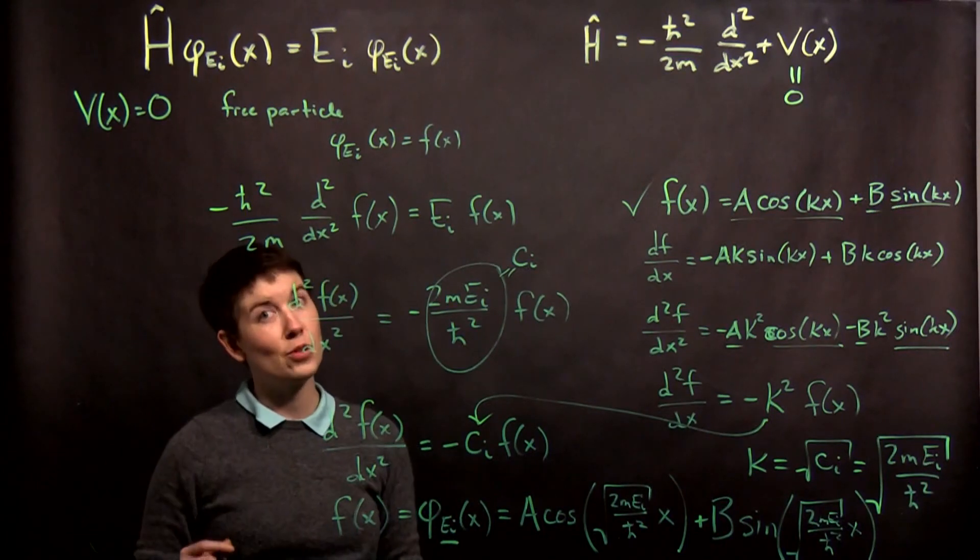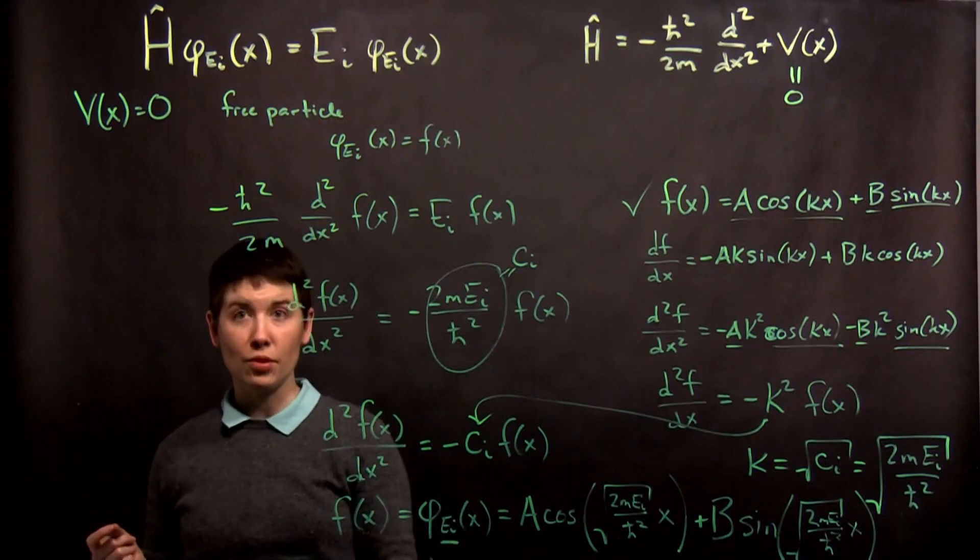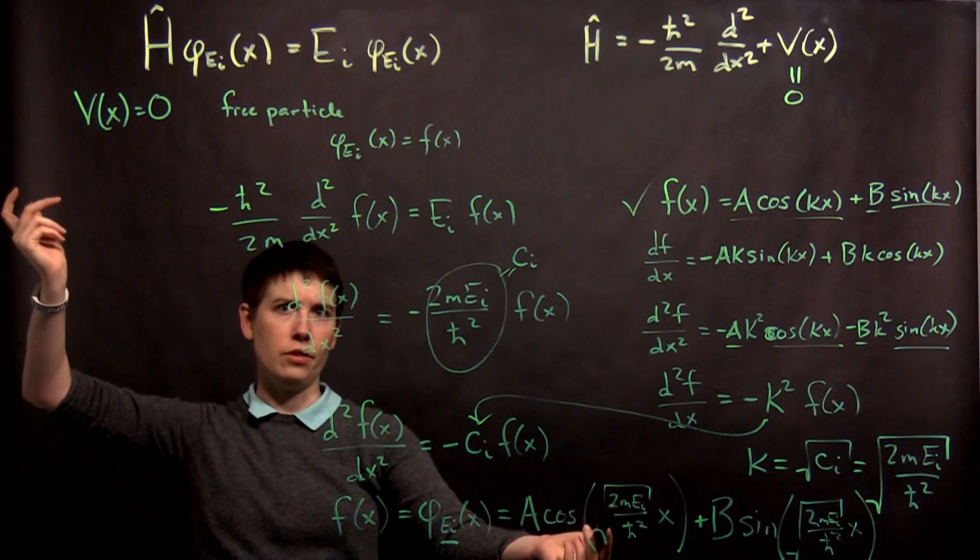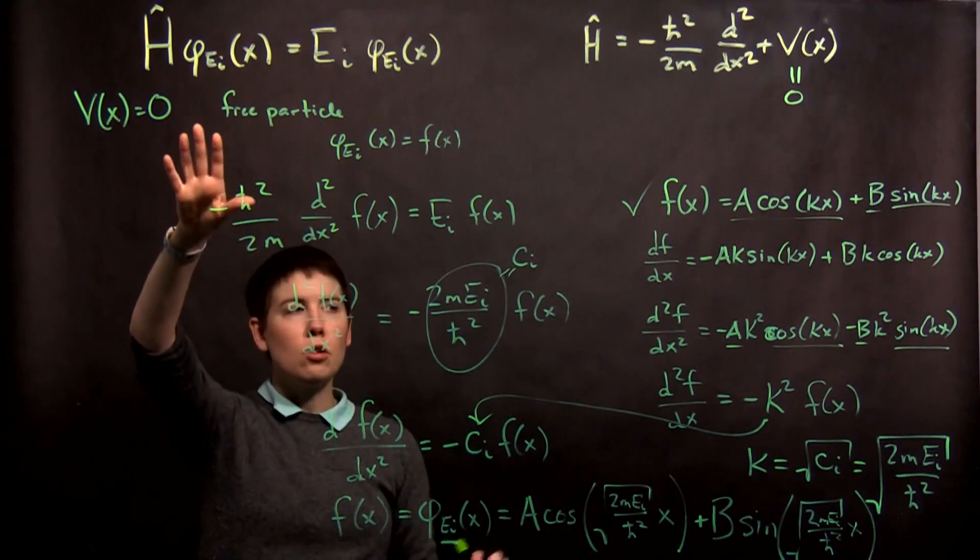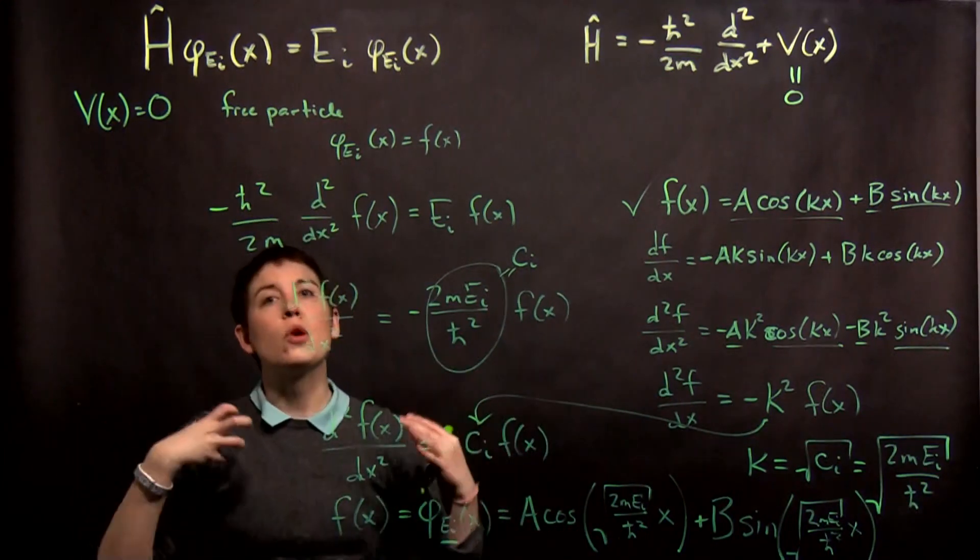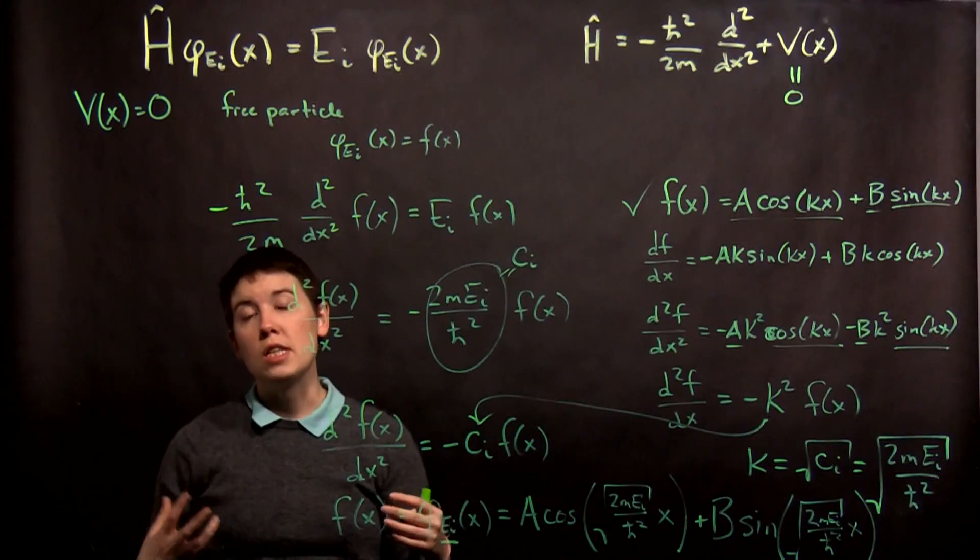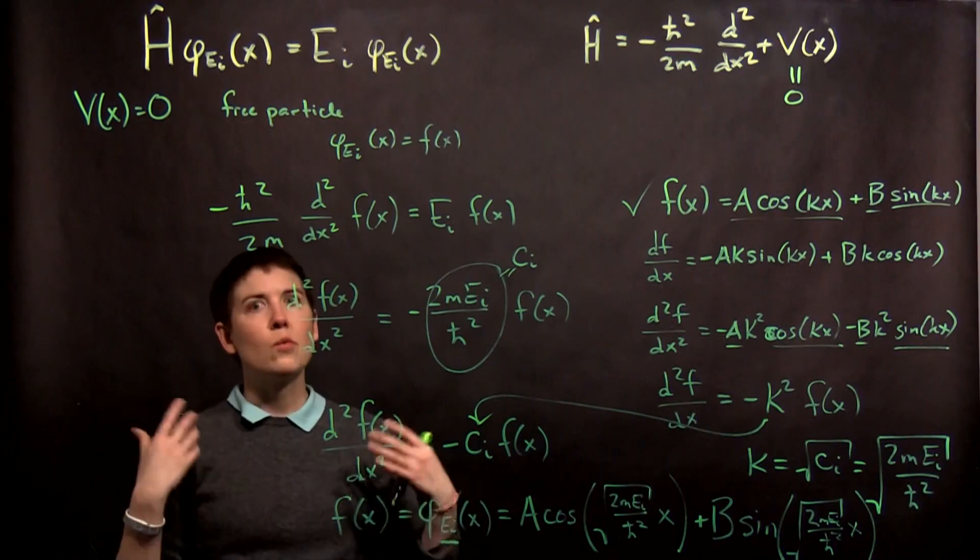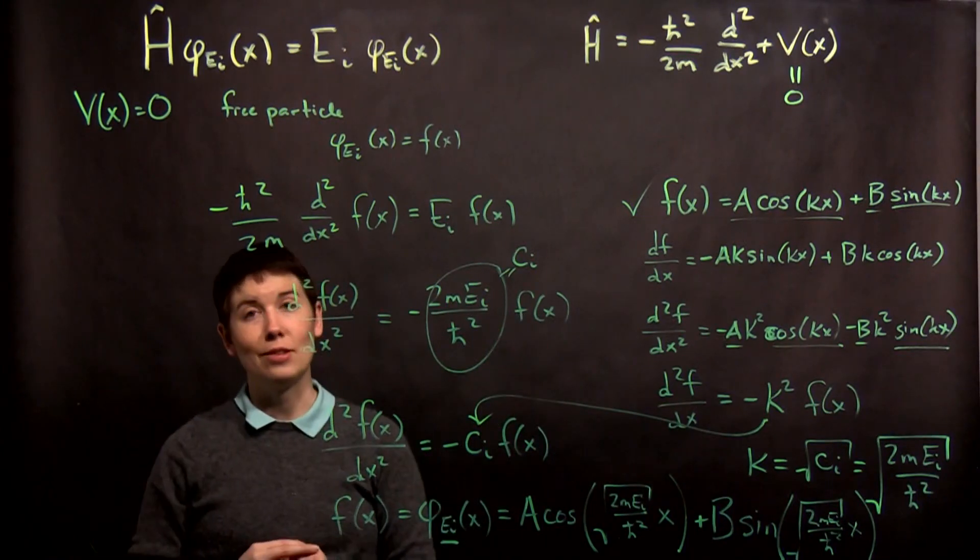We would then need other information to figure out what the values of energy can be, and in fact we can't really do that for the free particle. We can actually have any value of energy here. So the free particle one is easy to solve, but we don't get all of the boundary conditions that we need, and that's why the infinite square well is actually the best one for us to start with since then we have boundary conditions that can enforce this a little more.